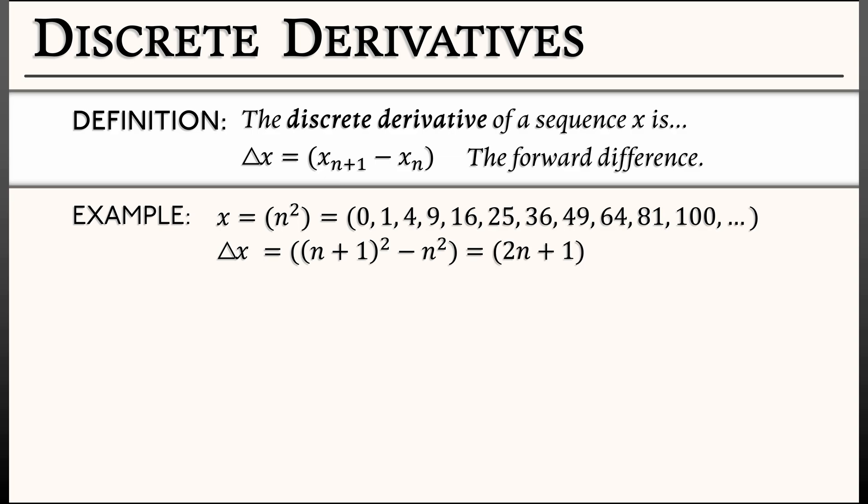If I write out the individual terms, I get 1, 3, 5, 7, 9, 11, 13, etc. Now, if I look back at the original sequence, this difference is giving me the differences in the individual entries. Do you see that? Aha!